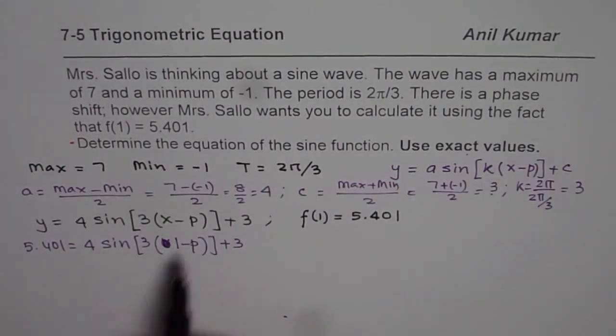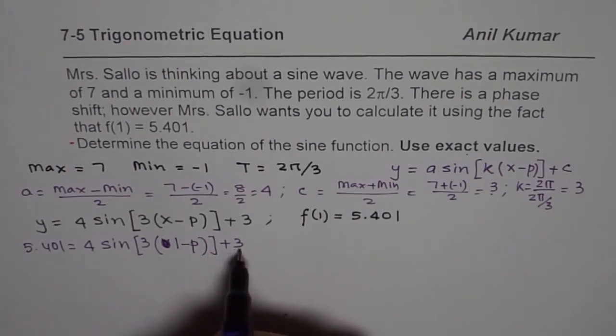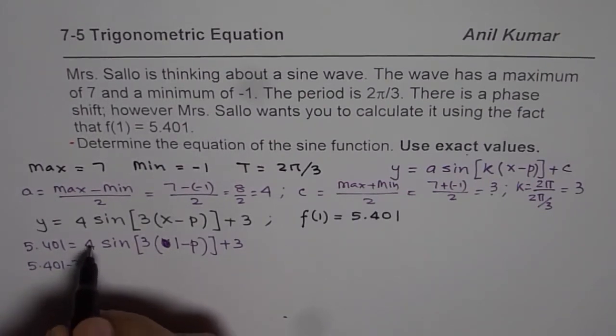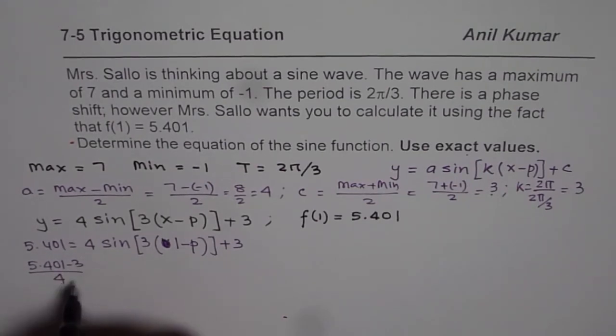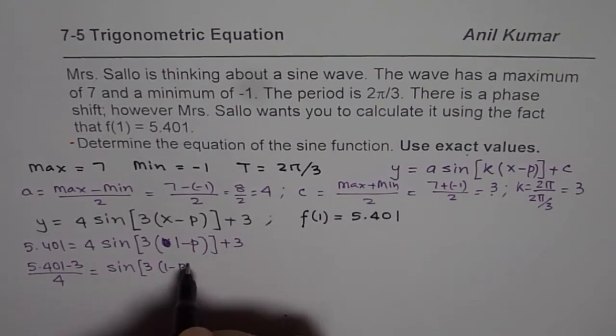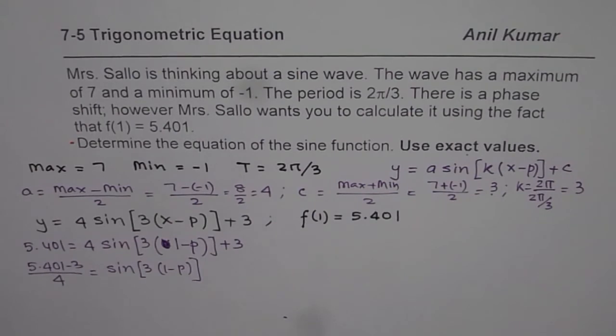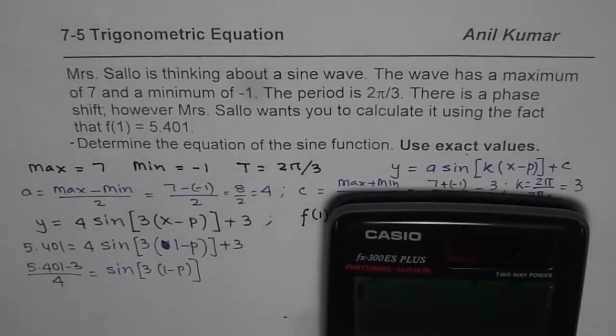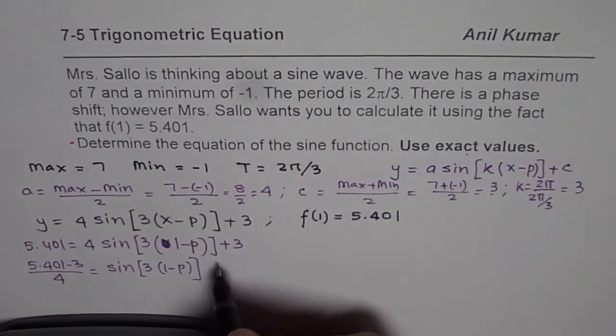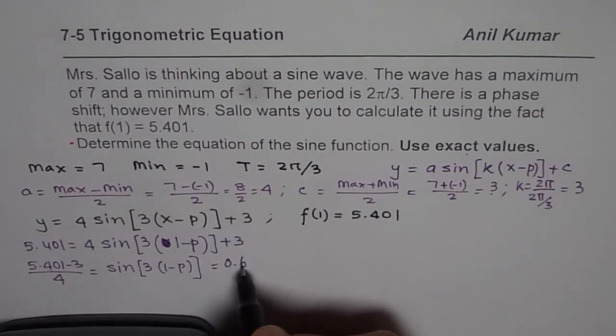We will solve this equation and find the value of p. To solve, I will take 3 on this side, so we have 5.401 minus 3 and then we will divide by 4. Let me do these two steps at the same time which is going to give sin(3(1 - p)). It is time to use calculator. We have 5.401 minus 3 divided by 4 equals 0.60025.